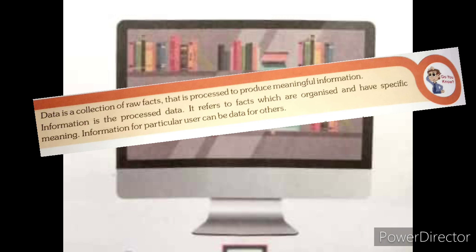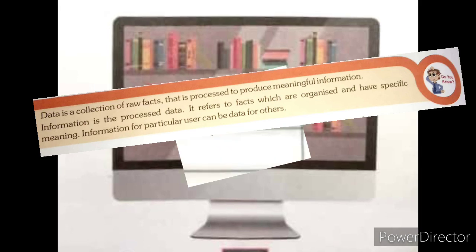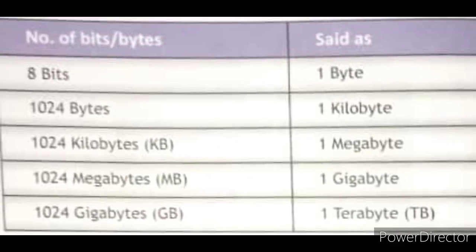Information for a particular user can be data for others. Now, memory or storage, in context of a computer system, refers to the storage of data that is measured in multiples of bytes. A group of 8 bits is called a byte. Different units of storage of data are as follows.